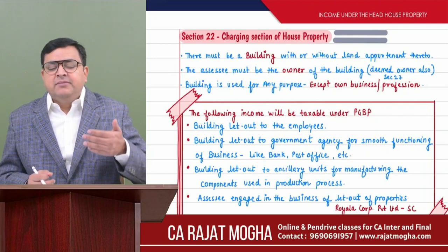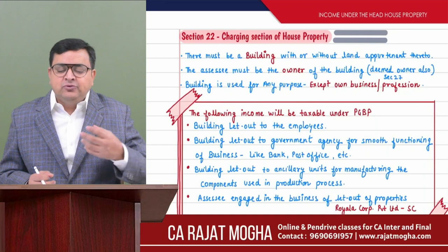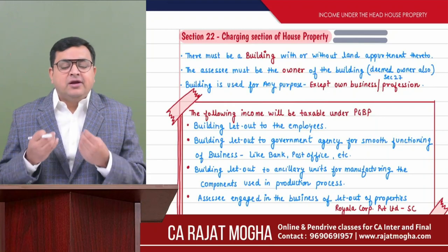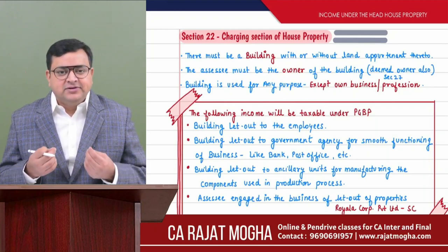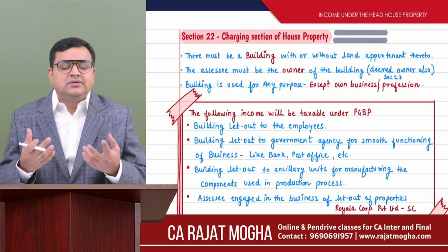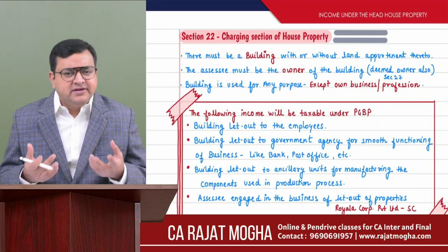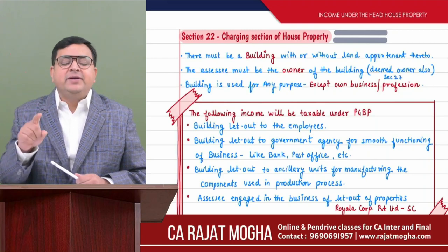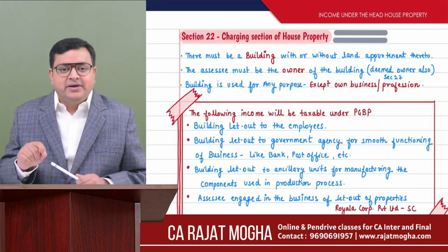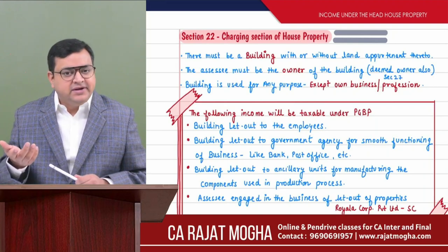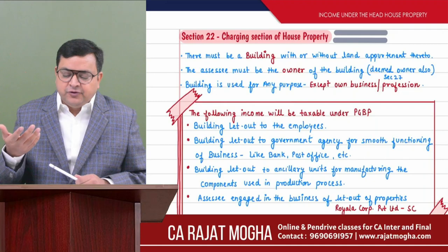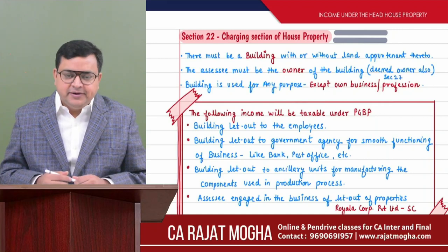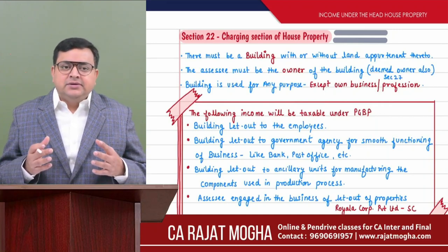If accommodation is given on concessional rent or rent-free to employees, it is because those employees work for the company — to save their time, save commutation time, to be more productive. For business purpose, such perquisite accommodation is given to employees. So if any concessional rent is recovered from employees, that income will be taxable under PGVP, not under house property, because that building is being used for business purpose.